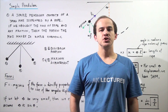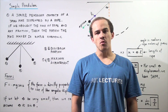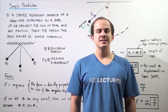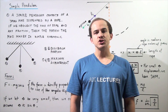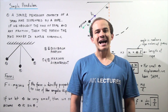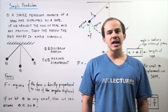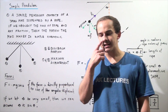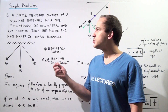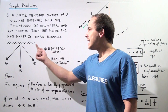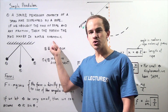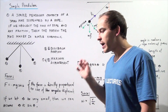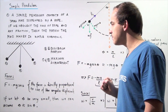Another example of an object undergoing simple harmonic motion is a simple pendulum. A simple pendulum consists of a mass suspended by a rope. As long as we assume that our rope has no mass, and as long as we neglect any type of friction between the air molecules and our mass, we can assume that our simple pendulum is experiencing simple harmonic motion. Actually, that's not exactly true because we also have to make a third assumption which we'll talk about in just a moment.